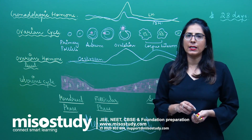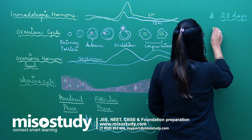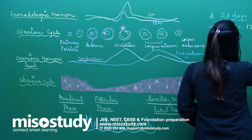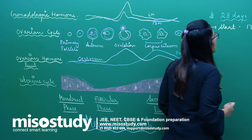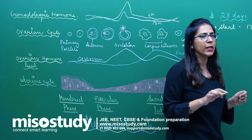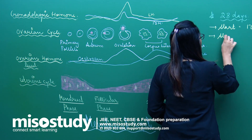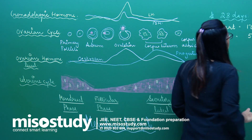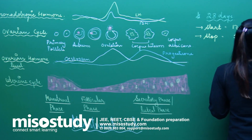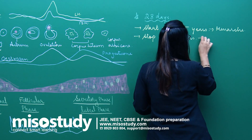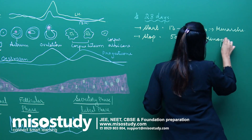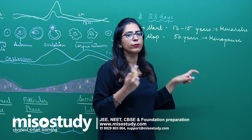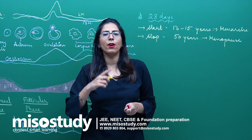The menstrual cycle starts at the age of 13 to 15 years, which is termed as menarche. It stops around the age of 50 years, which is termed as menopause. Between 15 to 50 years, this is considered the reproductive stage of a woman's life.